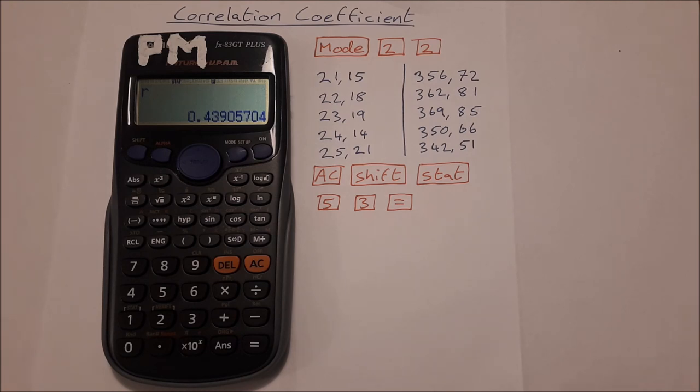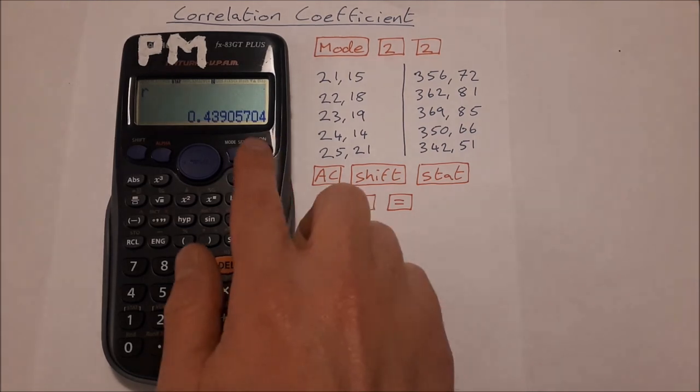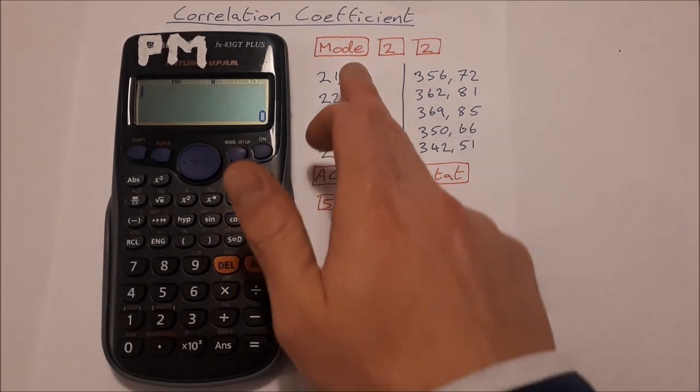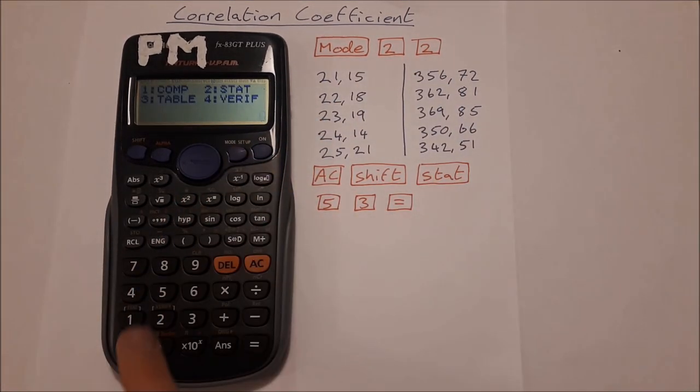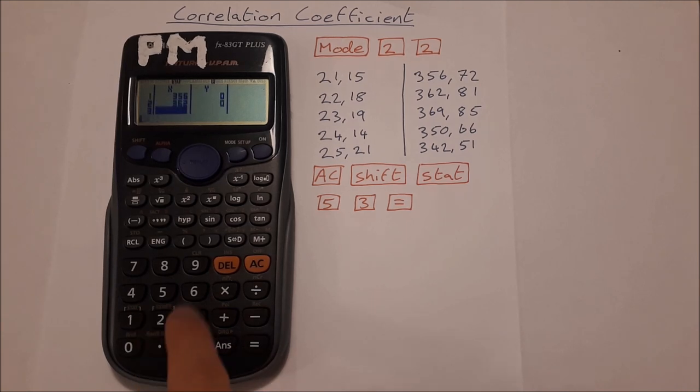And exactly 0 will be no correlation. Let's try our second data here, so I'm going to start again. Mode 2 2, then 356 equals, 362 equals, 369 equals, 350 equals, 342 equals.